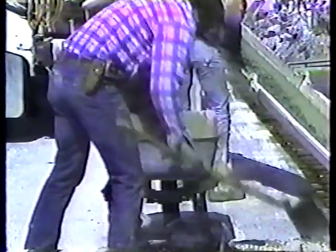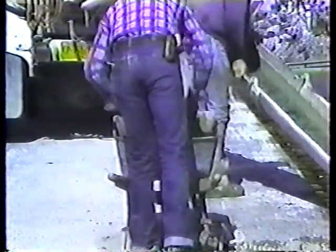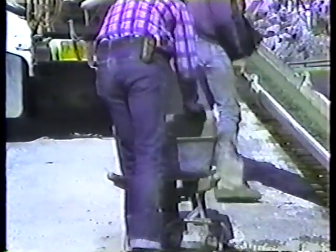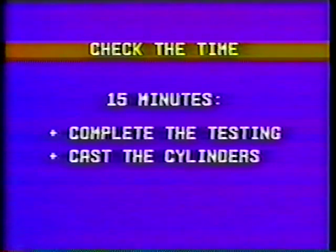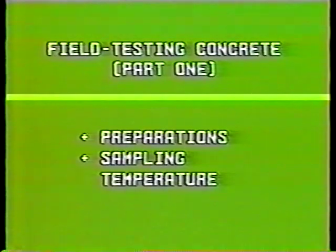The sample should be mixed with a shovel, just enough to give it a uniform appearance. Then it should be covered to protect it from the sun and the wind. Don't let it dry out. One last point in sampling: check the time. You have 15 minutes to run the testing and cast the cylinders, if they're going to be made from this load. And that covers sampling.